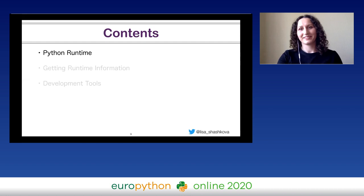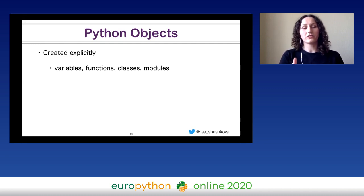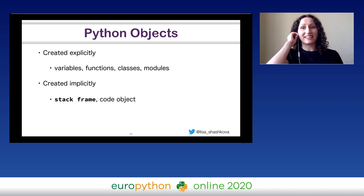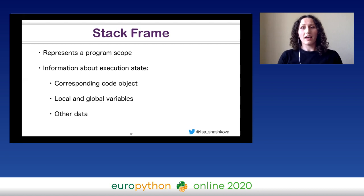Let's start with learning the basic concepts. When you want to use some objects in your Python program, you usually create them explicitly — for example, you use an assignment statement to create a variable, keywords like def or class to create functions and classes. But when the Python interpreter executes your code, it creates not only objects which you declared explicitly; it also creates a lot of different utility objects which contain information about the current execution state. The most important of them is the stack frame object. A stack frame object represents a program scope. It contains information like the corresponding code object, local and global variables in the current scope, and a lot of other data.